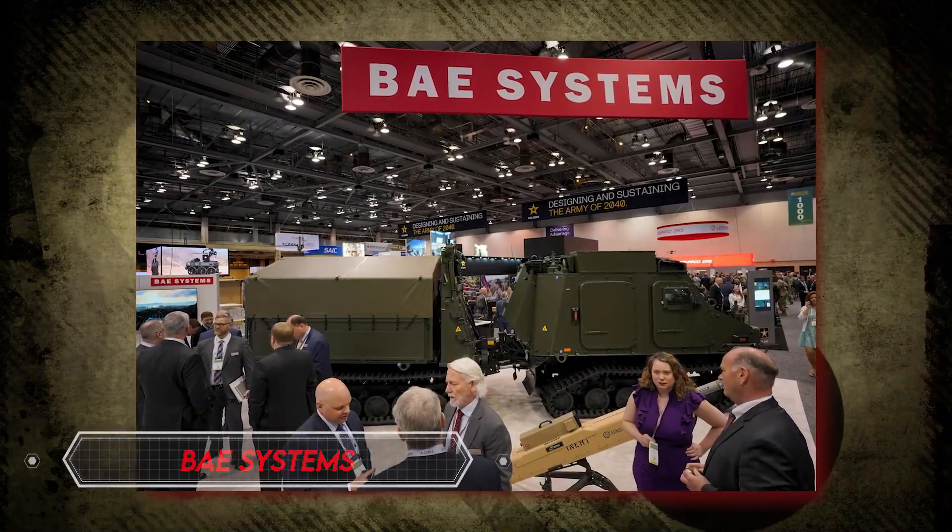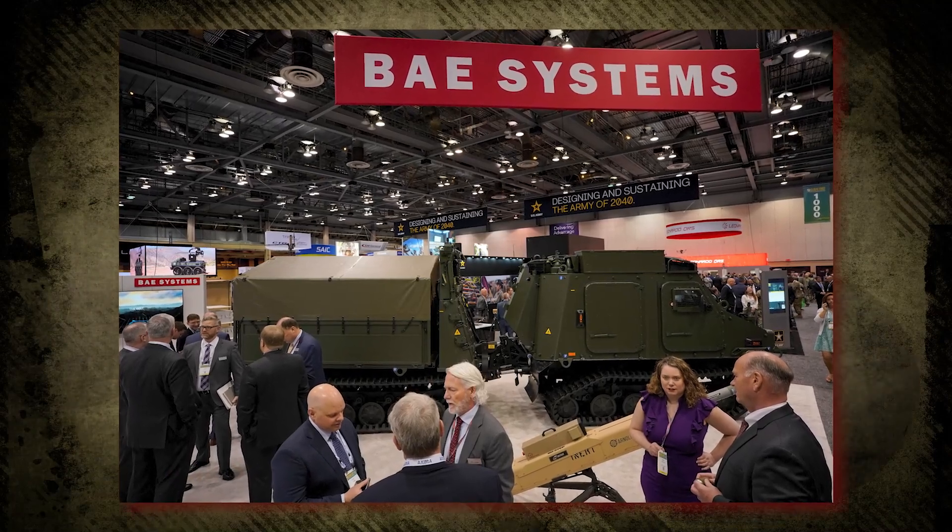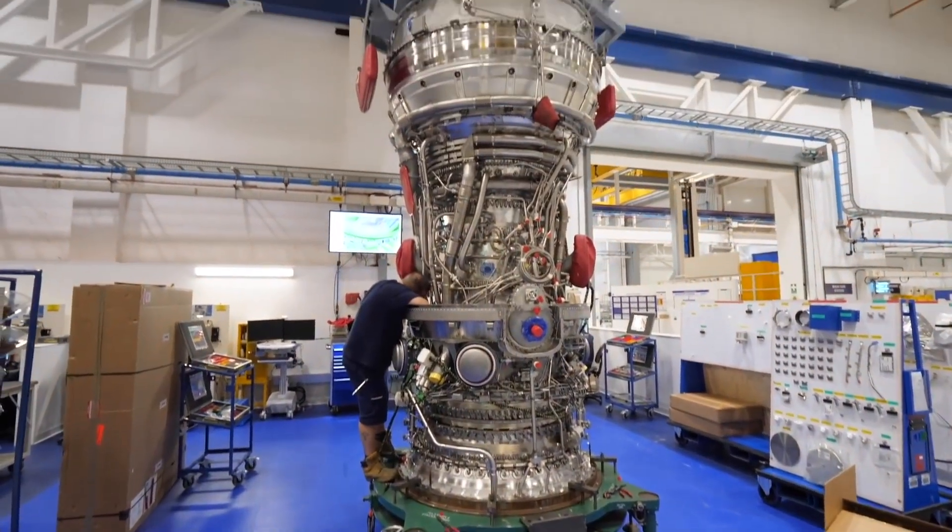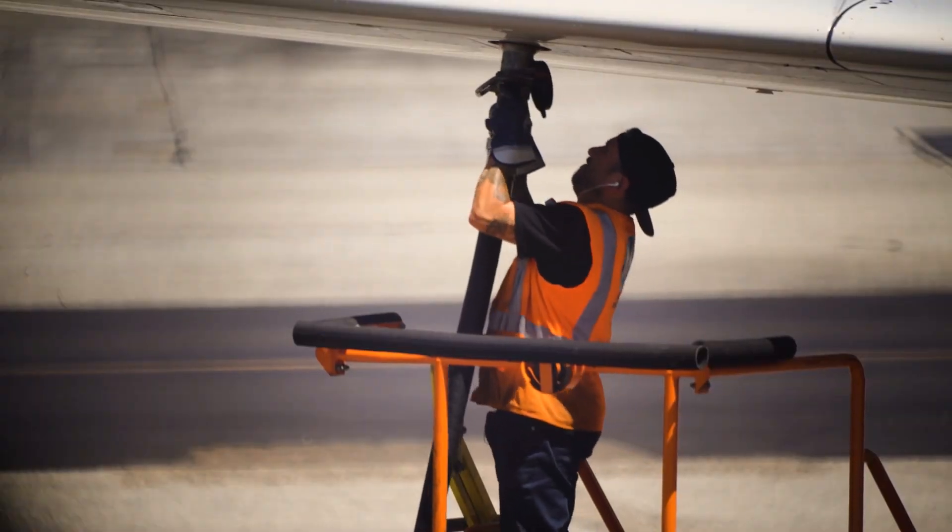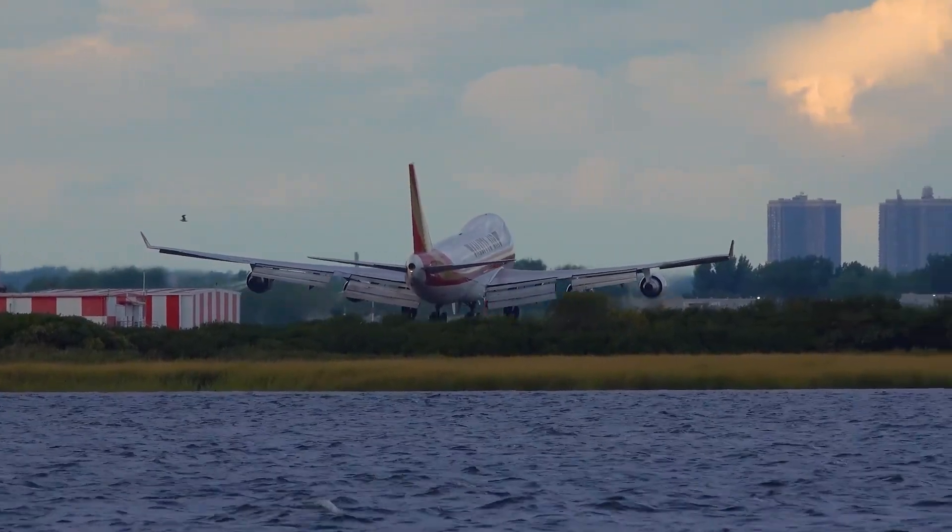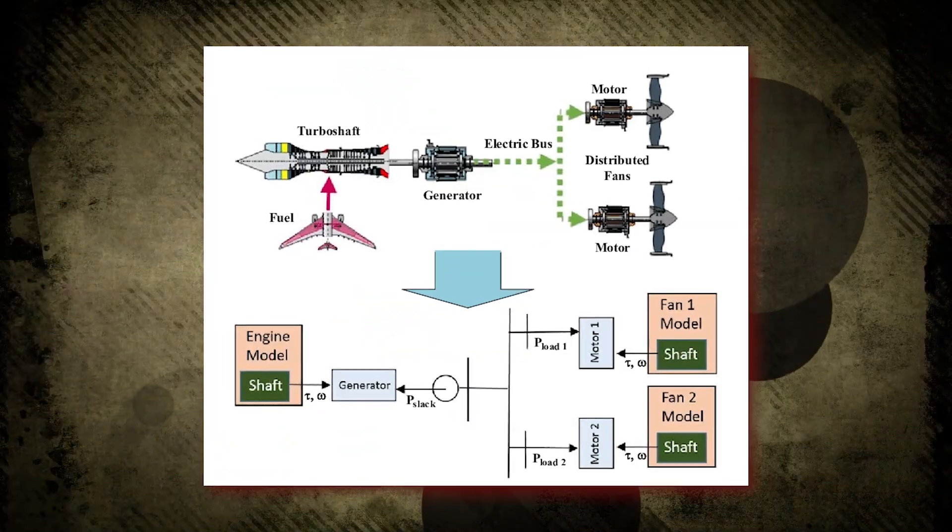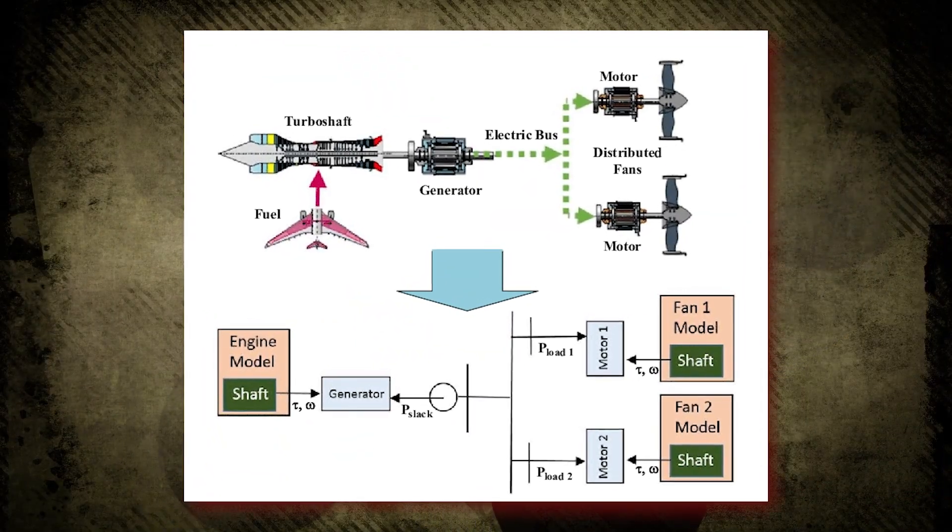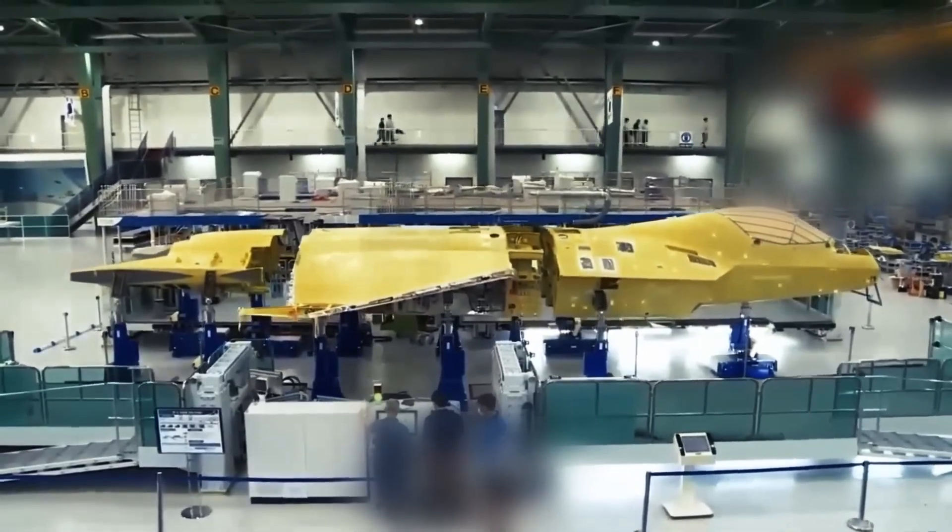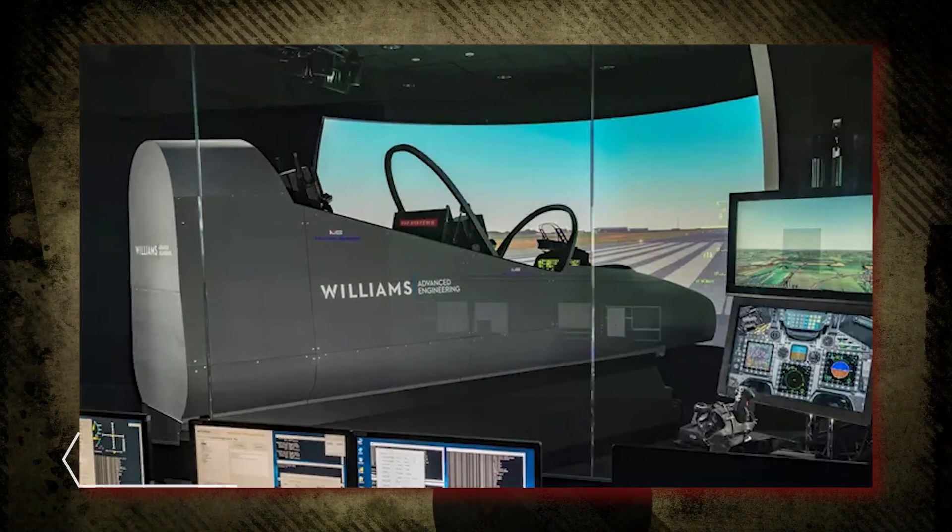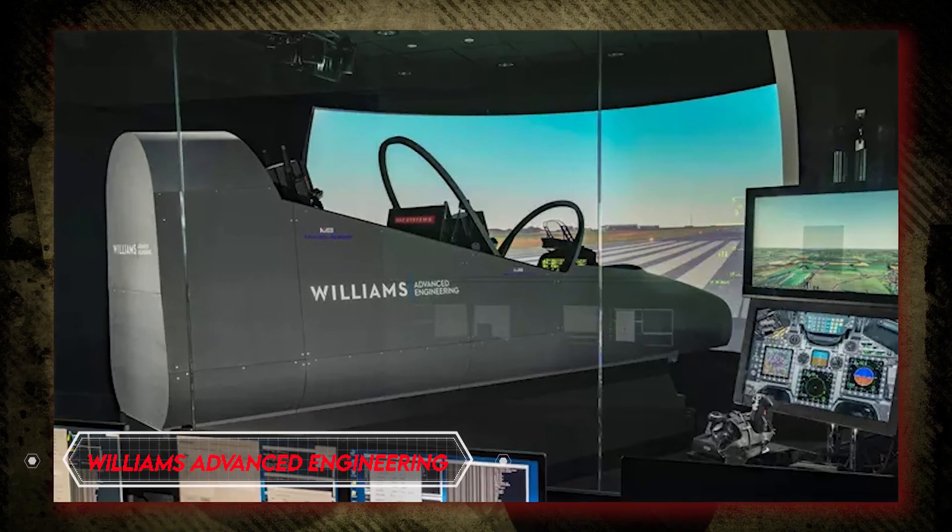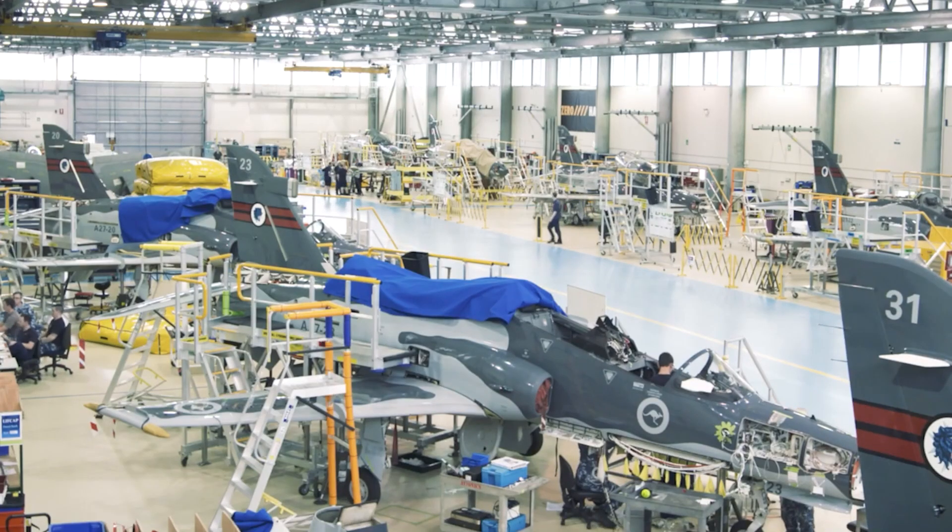BAE Systems, the lead contractor for the UK's upcoming Tempest fighter jet, is exploring the possibility of using electricity to power the aircraft instead of traditional jet fuel. This move holds environmental promise, but concerns about the readiness of electric propulsion systems by the jet's planned entry into service in 2035 have been raised. BAE Systems is collaborating with Williams Advanced Engineering, known for high-performance batteries, to explore various options for the Tempest fighter.